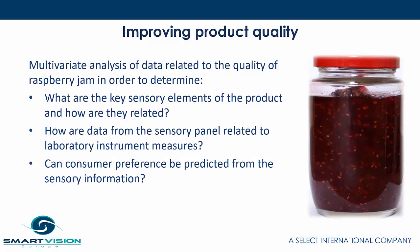There are three primary things we're going to try and address: what are the key sensory elements of the product and how are they related, how is the data from the sensory panel — which assesses the product — related to the instrument data and the objective laboratory instrument measures, and can consumer preference actually be predicted from the sensory data.